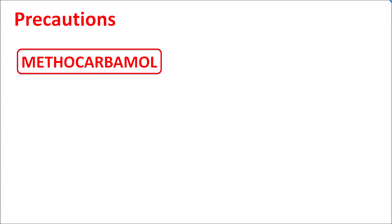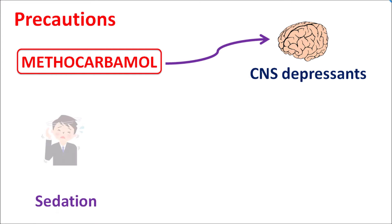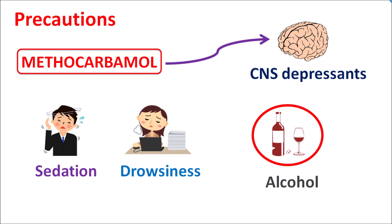One of the important precautions of methocarbamol is that this drug acts as a CNS depressant. CNS depressants can produce various side effects including sedation, drowsiness, and dizziness. Lightheadedness is one of the important effects of methocarbamol, commonly observed with many centrally acting muscle relaxants. This is particularly important when the drug is given along with alcohol, because alcohol can also produce CNS depression, resulting in enhanced sedation and drowsiness.